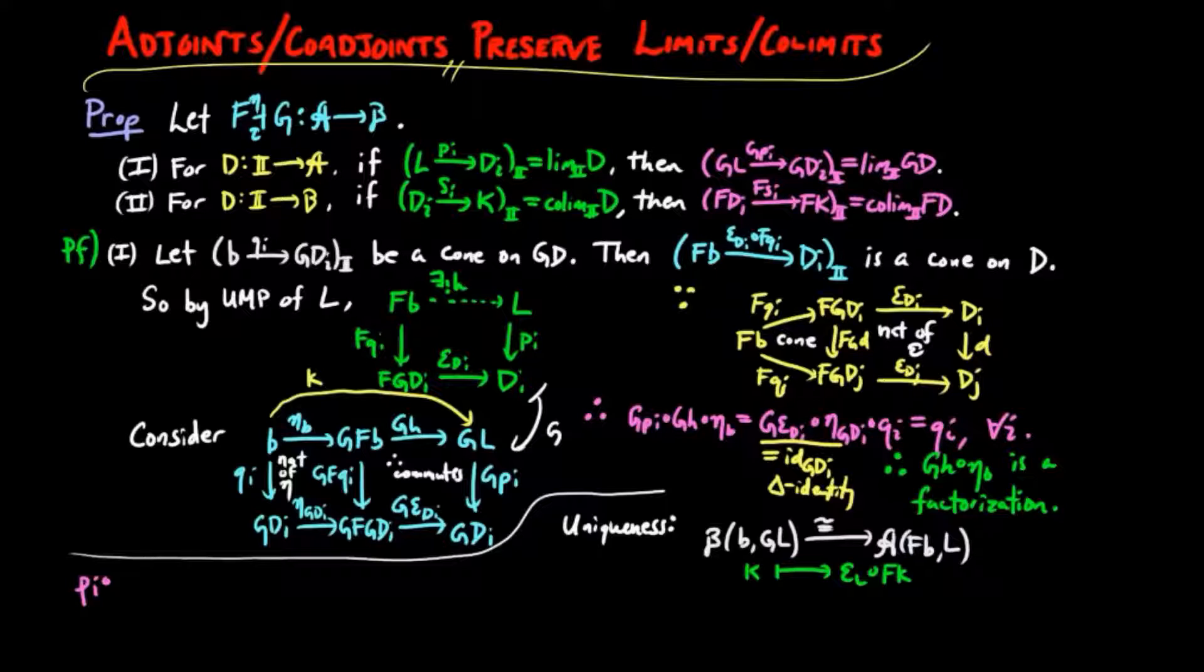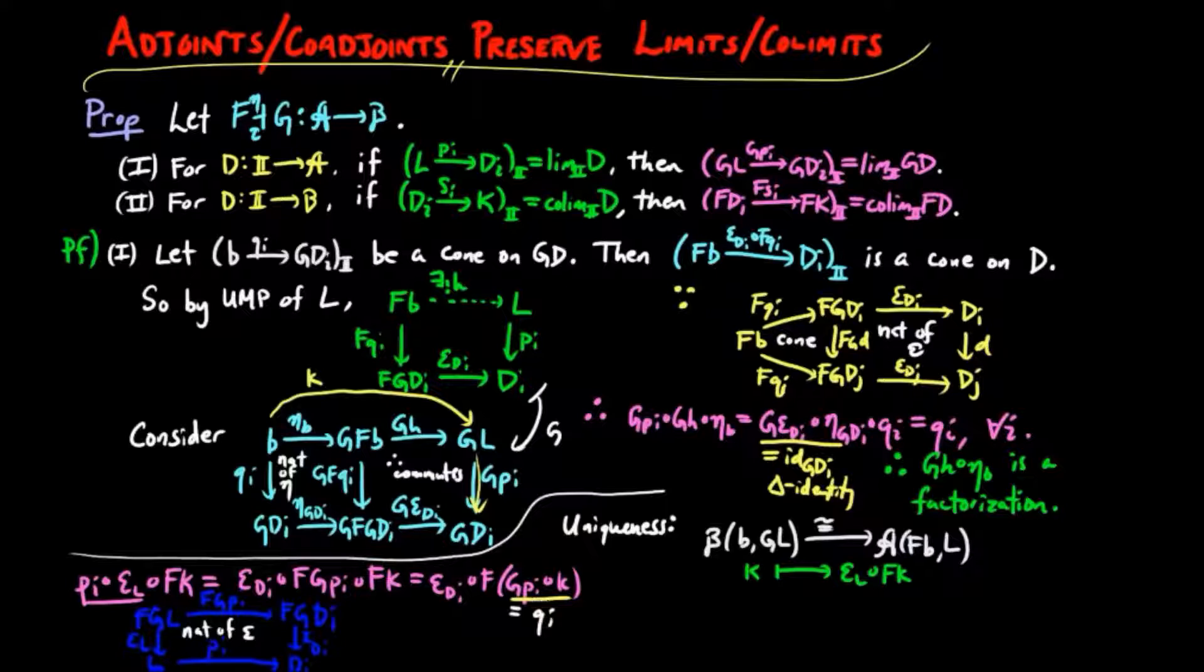But by naturality of ε, we have πi∘εL is equal to εDi∘FGπi. And so we have this equal to εDi∘FGπi∘Fk. Since F preserves composition, this is equal to εDi∘F(Gπi∘k). But Gπi∘k is equal to qi since k is a factorization of the cone above. So we have this is equal to εDi∘Fqi.